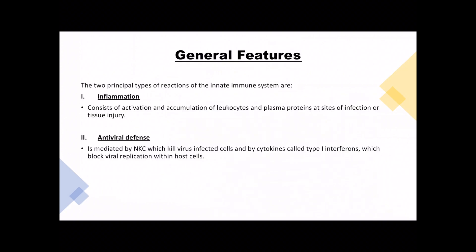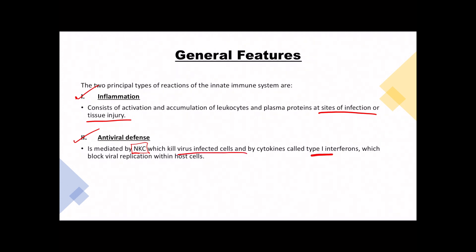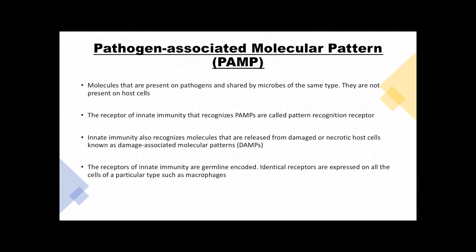What are the general features of innate immunity? We have two principal types of reactions mediated by innate immunity: inflammation and antiviral defense. Inflammation consists of activation and recruitment of leukocytes at the site of infection and tissue injuries. Antiviral defense is mediated by natural killer cells, which kill virus-infected cells, and by cytokines called type 1 interferons, which block viral replication within host cells.